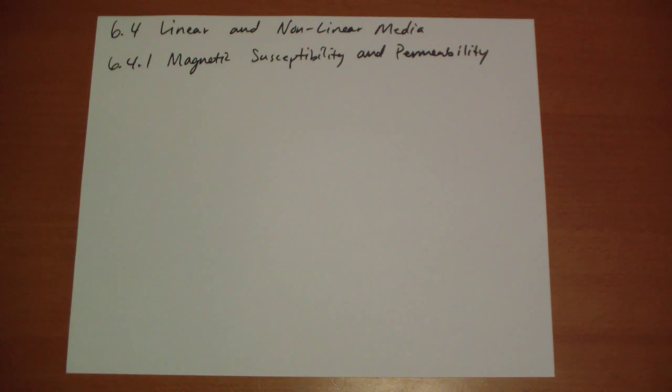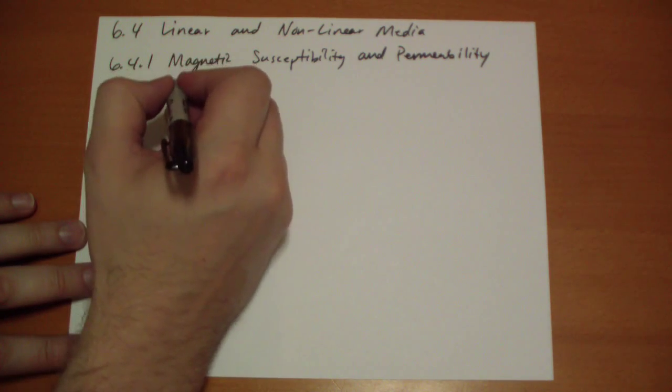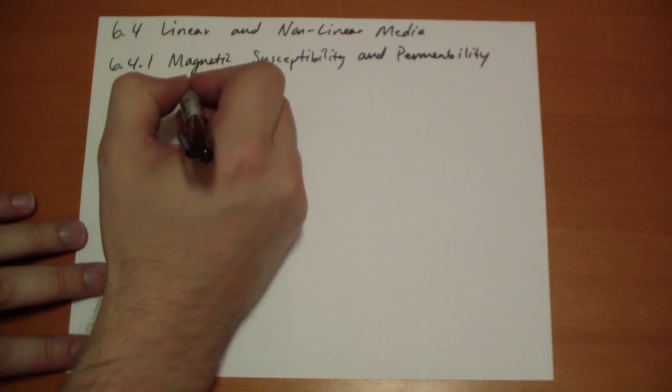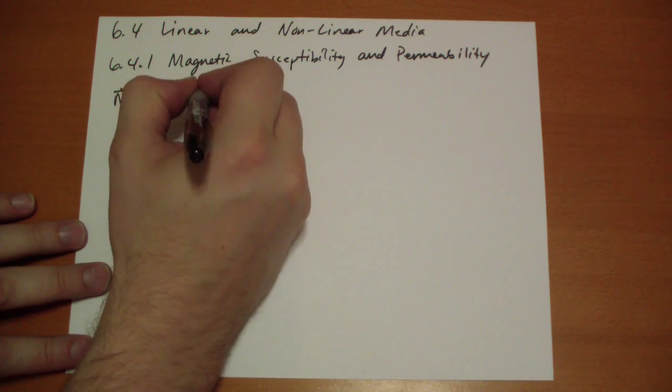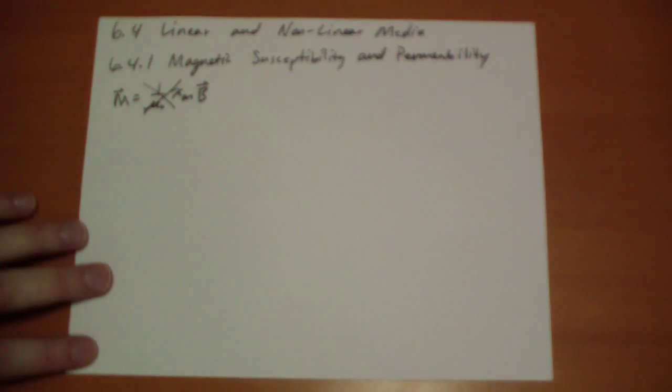So in most materials, in most substances, the magnetization is proportional by a positive or negative factor. It could be anti-parallel or parallel to the magnetic field you drop it into. Now, you might be tempted to write out this equation that parallels exactly with what you saw in linear dielectrics. But this is not the way that we do it.